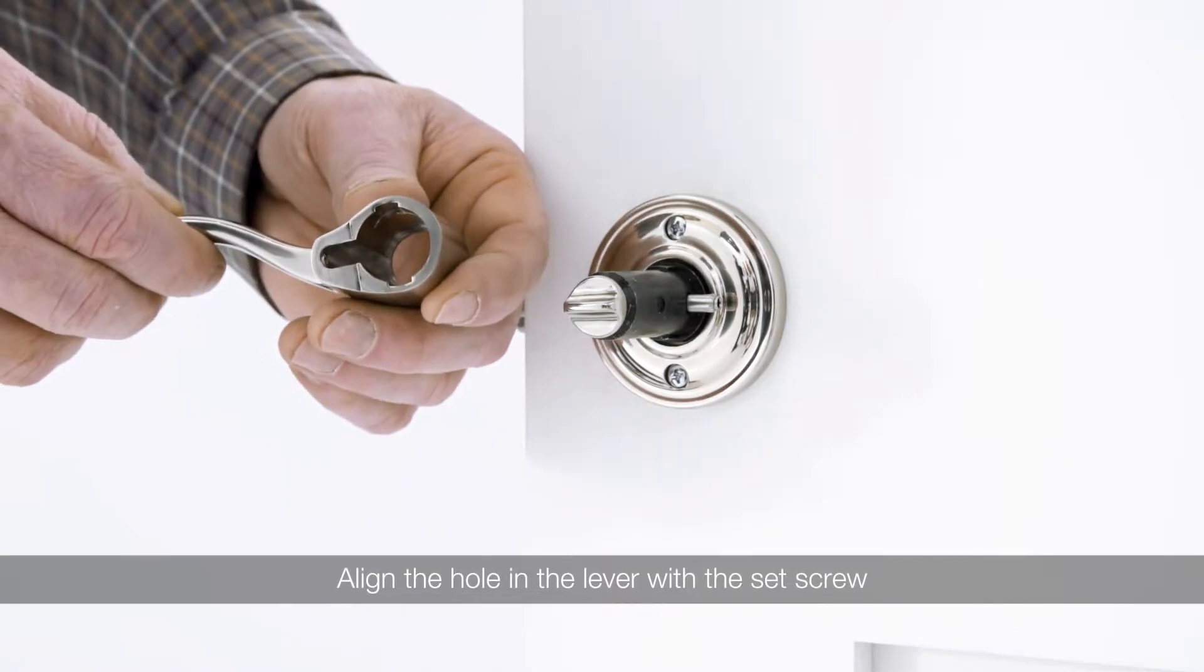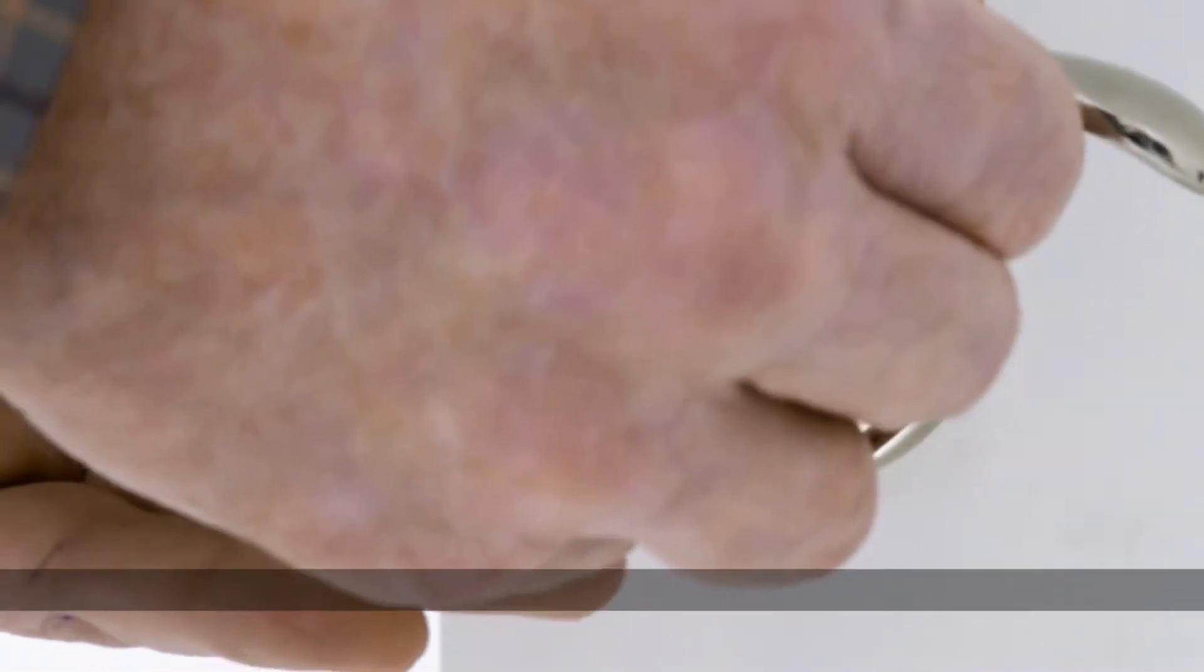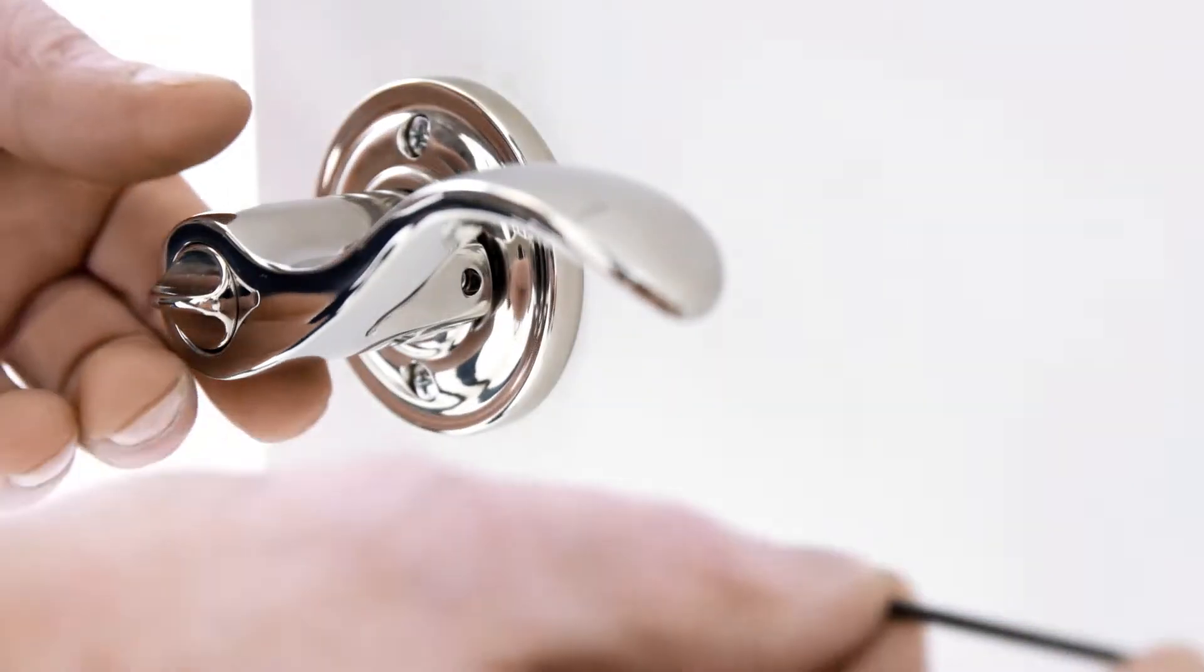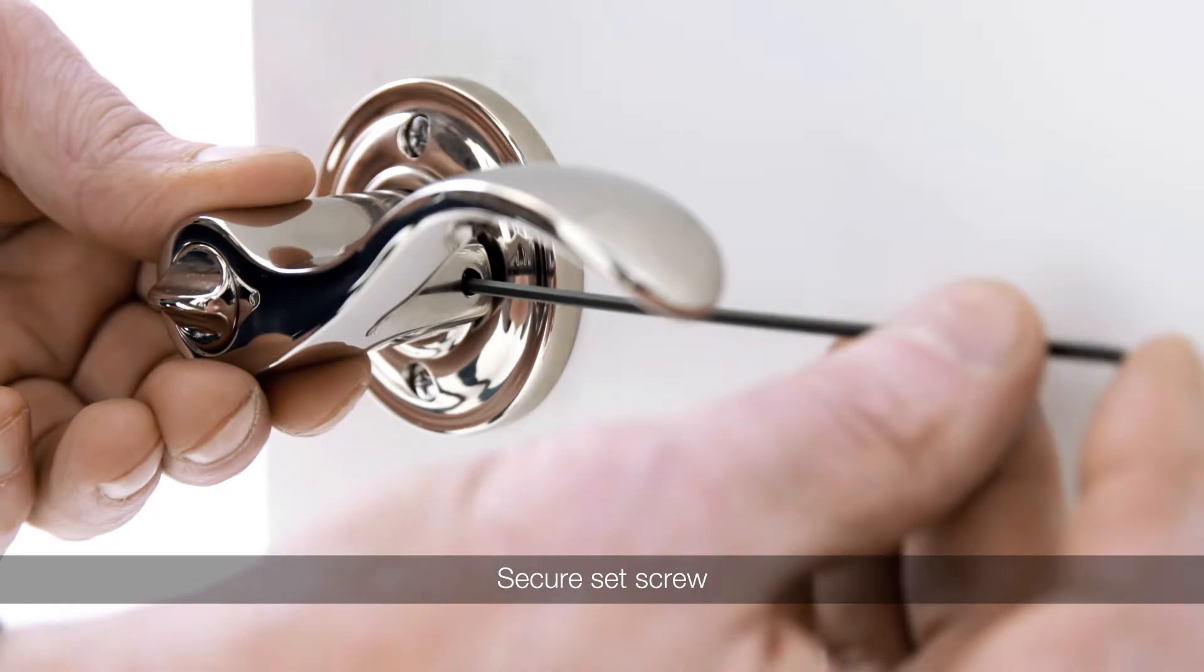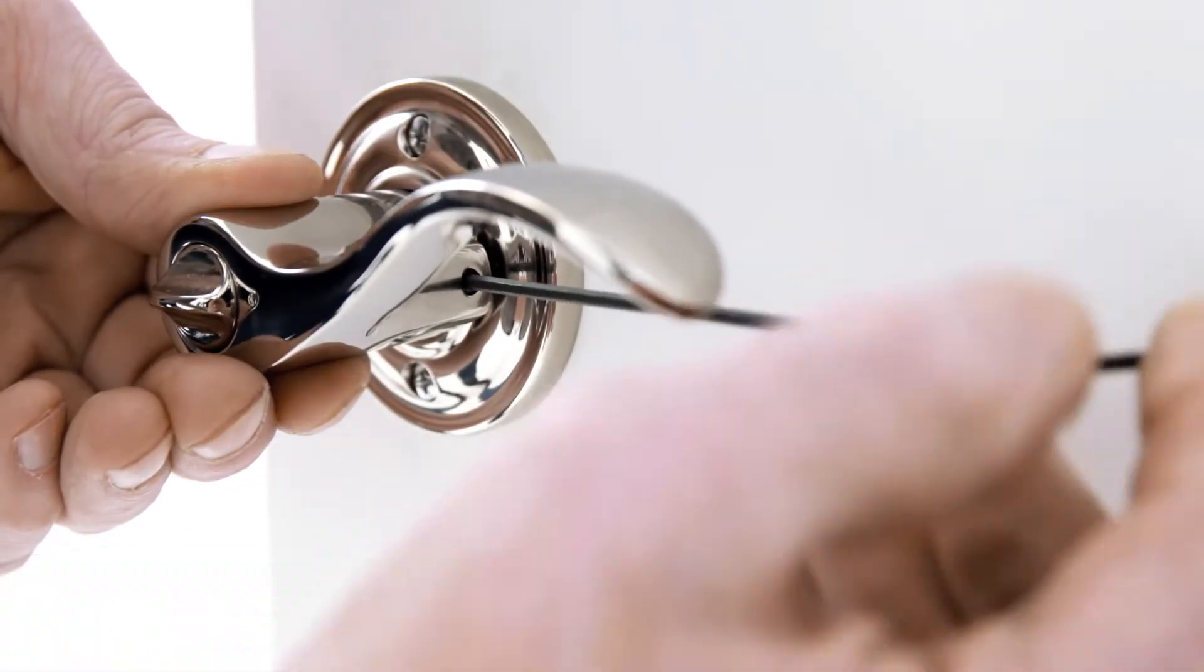Install the interior lever first by aligning the hole in the lever with the set screw. Do not remove the pre-installed set screw. The hole in the lever will be facing towards the hinges. Insert the allen wrench into the side hole to locate the pre-installed set screw. Turn clockwise to tighten.